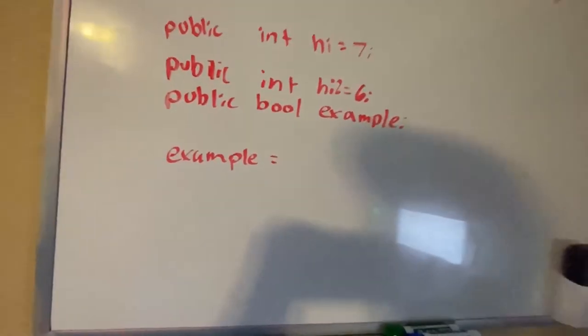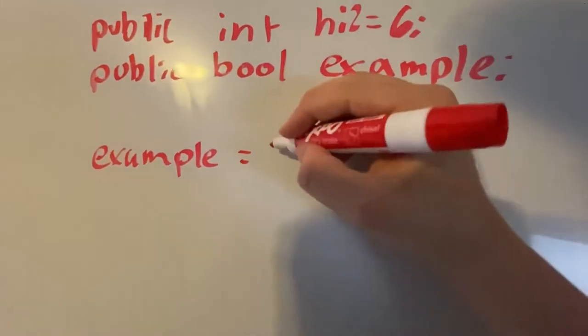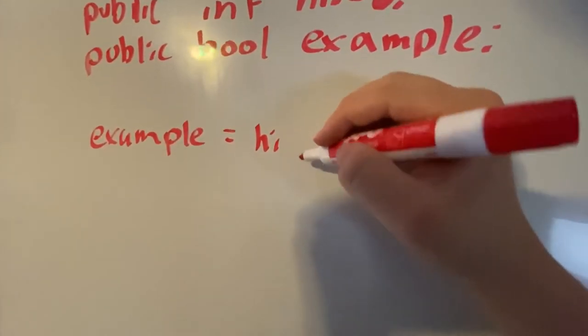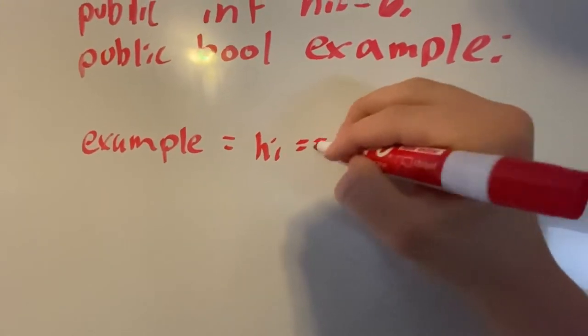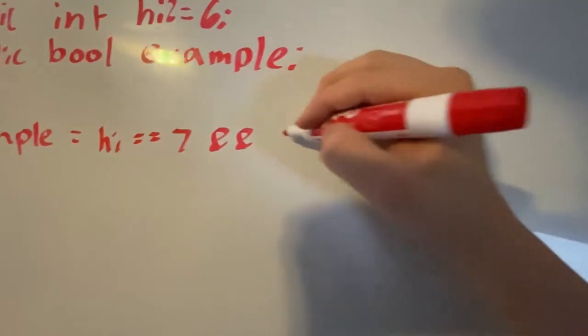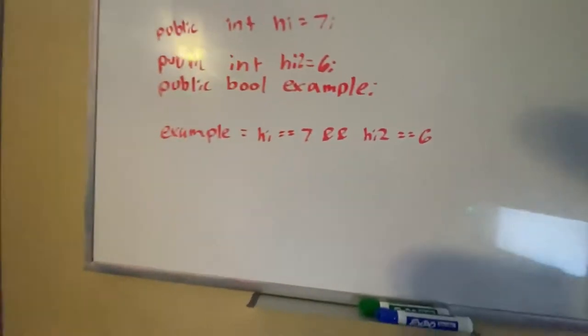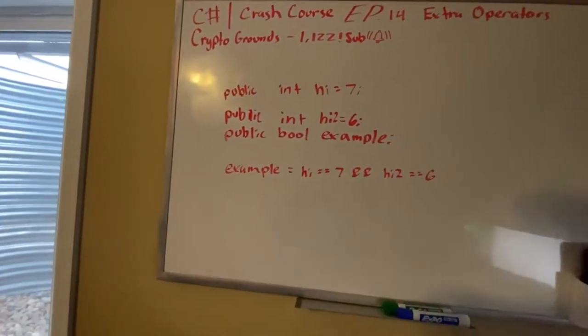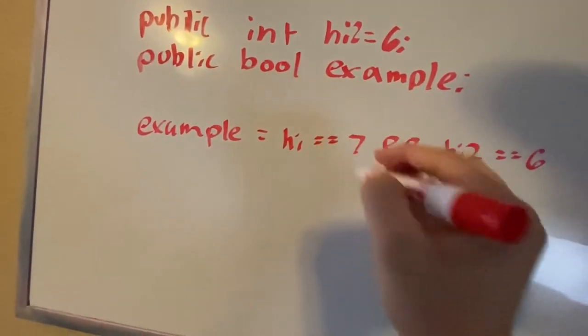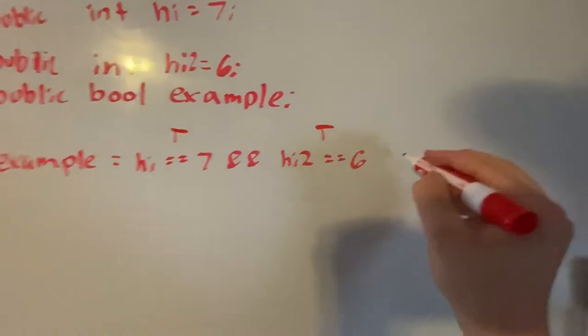So we can do, for AND, we can do if high is equal to seven and high two is equal to six, then this will be true, otherwise it'll be false. So how does this work? So basically, if both these are true, then it'll be true.